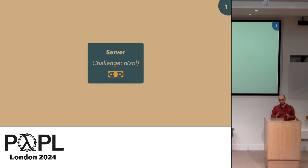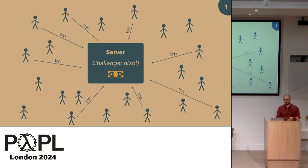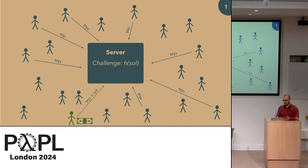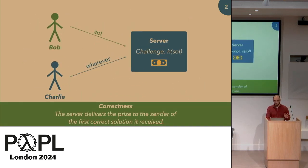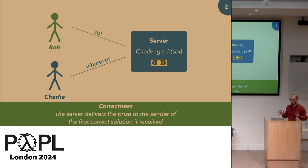Let's say you have a server holding some kind of monetary prize, and to get it, you have to solve some kind of challenge. You have a public hash of some private value solution, and anyone can attempt to get this prize by submitting a bitstring to this server. The first person to get it right will actually get the prize — you might submit at random and be lucky, or maybe some people have the solution beforehand and are the only ones supposed to be able to get the prize.